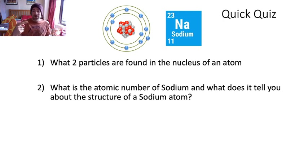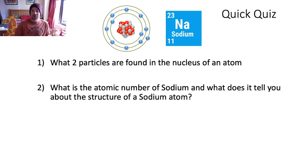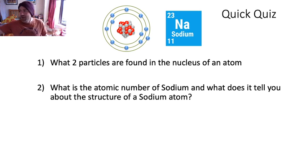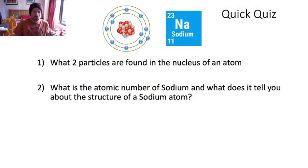Question two: next to the sodium atom symbol at the top you've got two numbers - 23 and 11. Which one is the atomic number? So what's the atomic number of sodium, is it 23 or is it 11, and what does that tell you about the structure of the sodium atom?